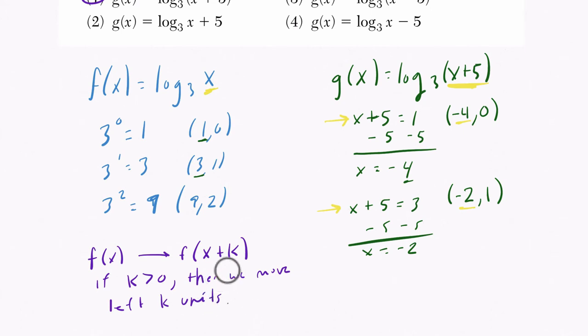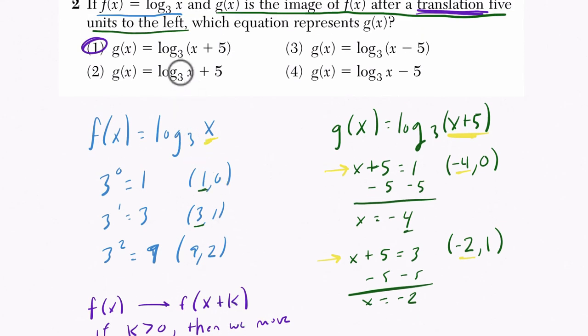And likewise, if we're subtracting k, we move right k units. Then, you know, you see these other things here. If you have f of x, like this is our f(x) function right here, log base 3 of x, and then you're adding to it, that's going to go up 5 units. So here it's going to go down 5 units, because that's our original function minus 5. Here, when you have your original function, but the input is being subtracted by 5, let's go to the right 5 units.